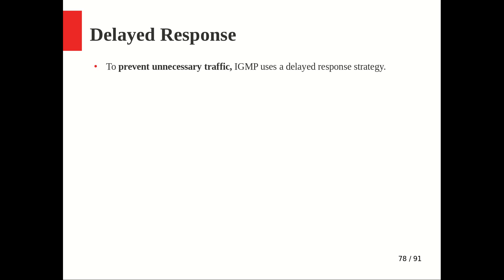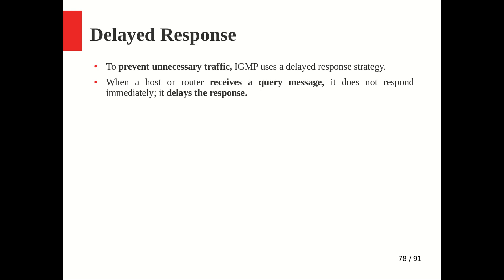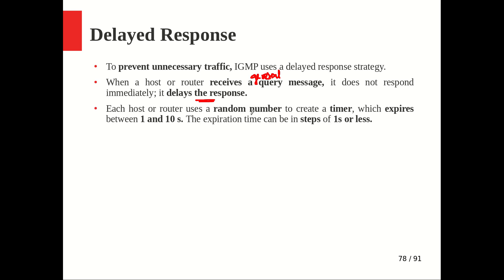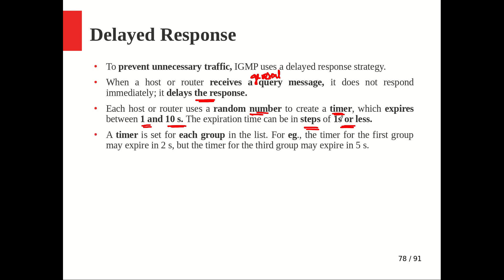To prevent unnecessary traffic, IGMP uses a delayed response strategy. When a host or router receives a general query message, it does not respond immediately. Instead, it delays the response using a randomly set timer that expires at a value between 1 and 10 seconds. The maximum response time is typically set to 10 seconds, and the timer can use a step size of one second or less.